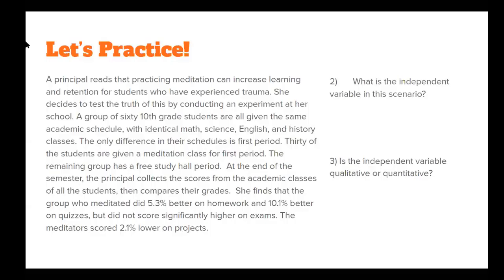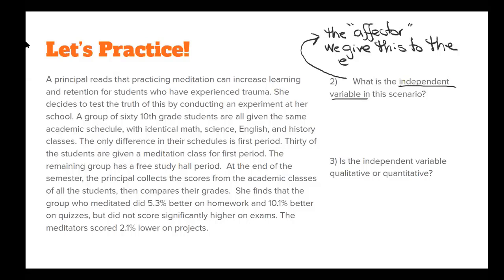Number two says, what is the independent variable in this scenario? Remember, the independent variable is the one that we think is causing the effect. It's the thing the researcher manipulates, so we give this to the experimental group. It's the thing we think is making the difference. So what is the independent variable in this scenario? What's the thing we're giving to our experimental group because we think it's going to make a difference?